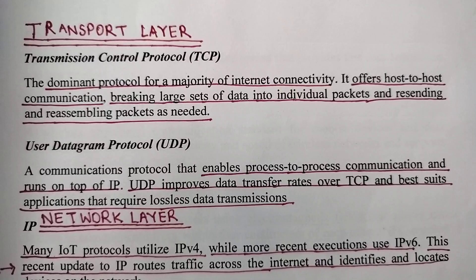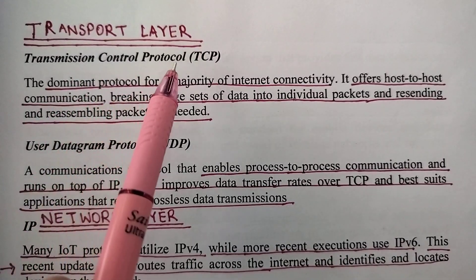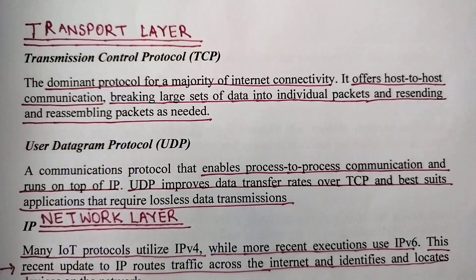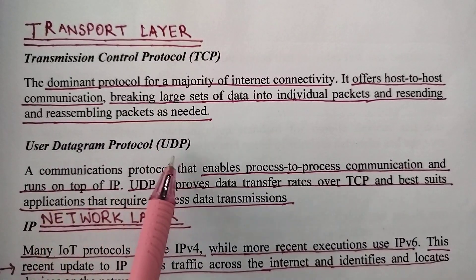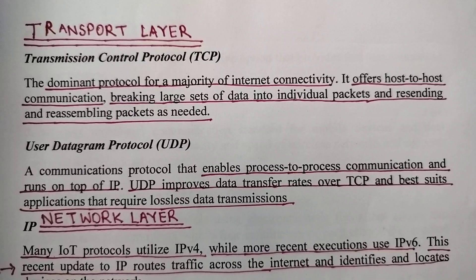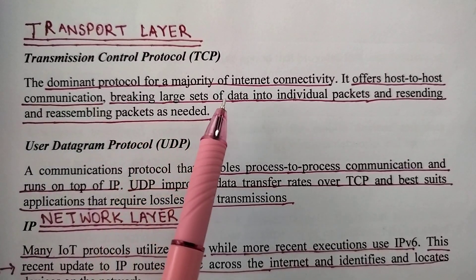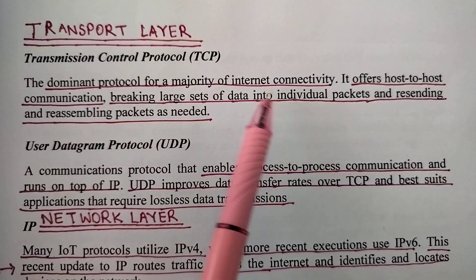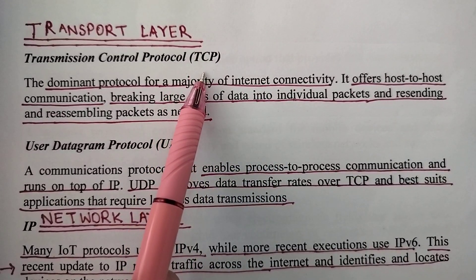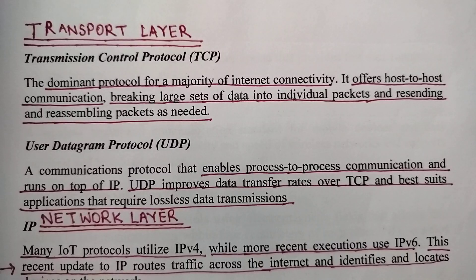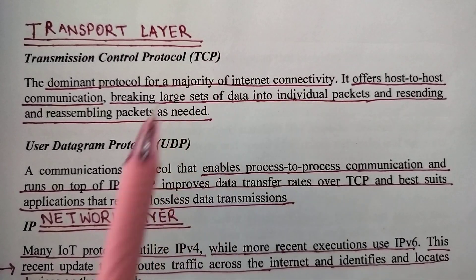The two important protocols at the transport layer are the Transmission Control Protocol, which is also known as TCP in short, and the User Datagram Protocol, which is also known as UDP in short. The dominant protocol for a majority of internet connectivity is the TCP protocol. In majority of scenarios, even in computer networks, the protocol which is dominantly used for internet connectivity is the TCP protocol.